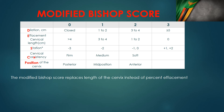Cervical consistency is easy because there are only three parameters, and you always start from zero. Firm or hard — like your forehead — is bad and scores zero. Medium scores one. Soft scores two, because a soft cervix means it will dilate easily.